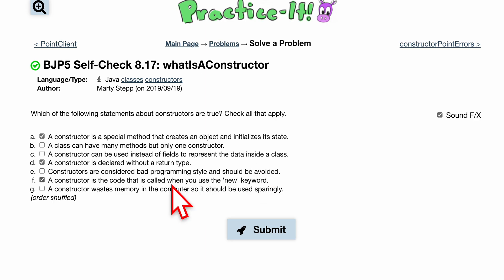Option D: a constructor is declared without a return type. This is true; we're not returning anything, just setting.